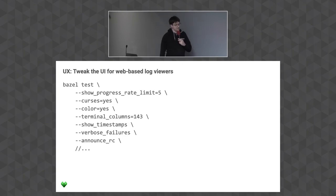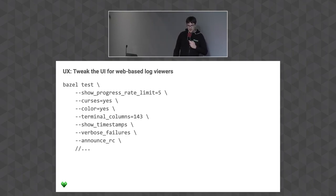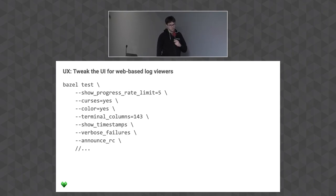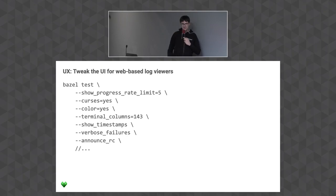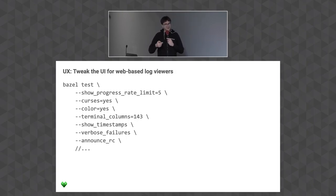Maybe set UI updates to every five seconds — that's still enough. Terminal columns is also a magic number I can really recommend — especially with BuildKite, setting this to exactly the width of their terminal emulator ensures line breaks correctly. Show timestamps is also super useful if you wonder whether something really ran as fast as you think, or if there was a gap somewhere. Verbose failures sounds obvious but it's super helpful on CI — if it fails you want the full message right there.